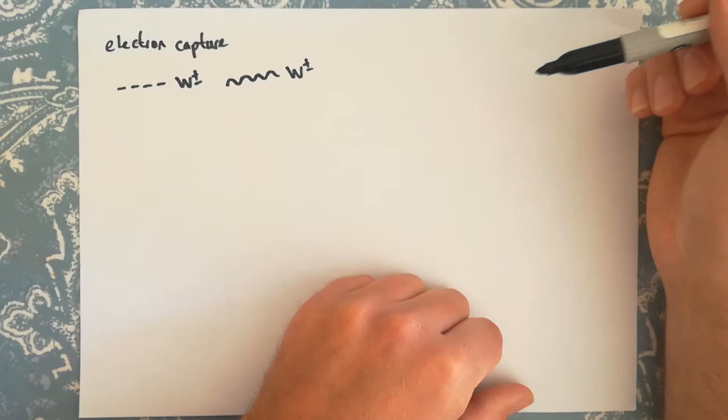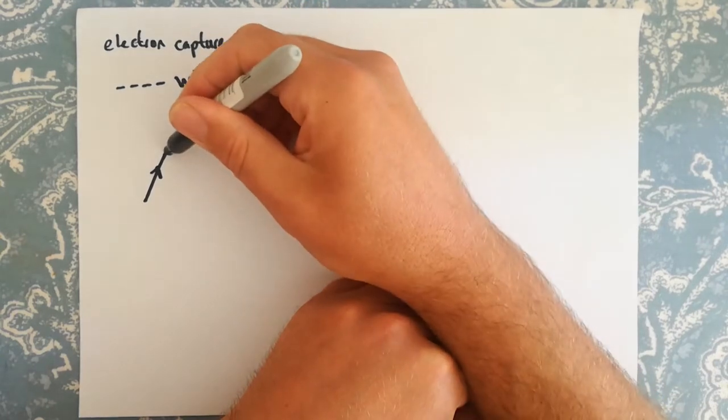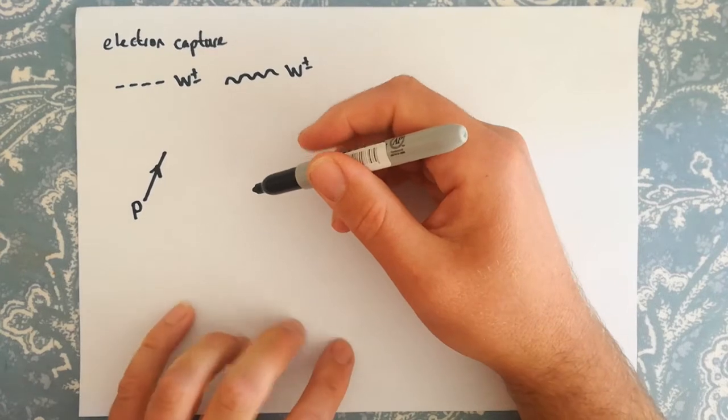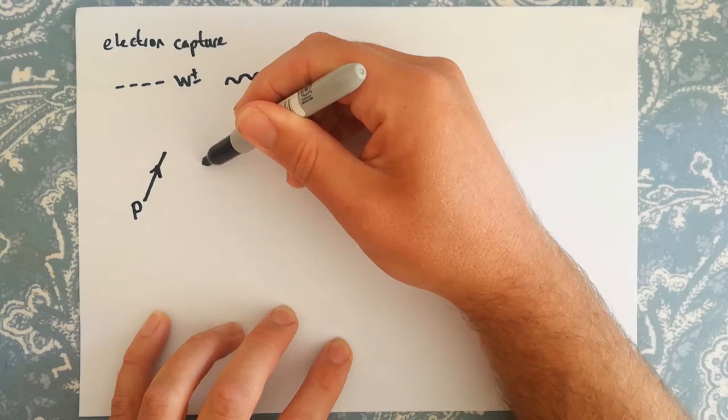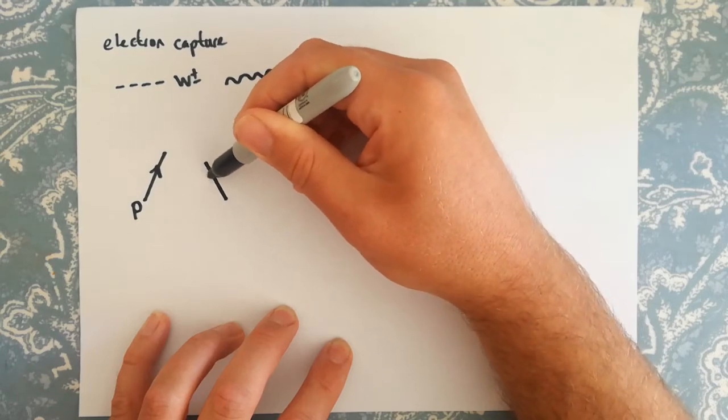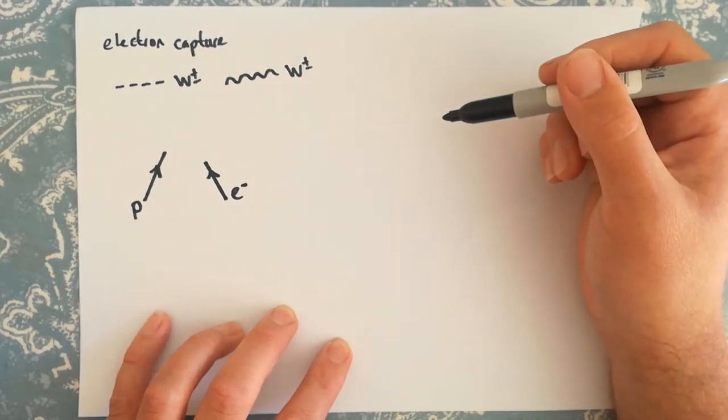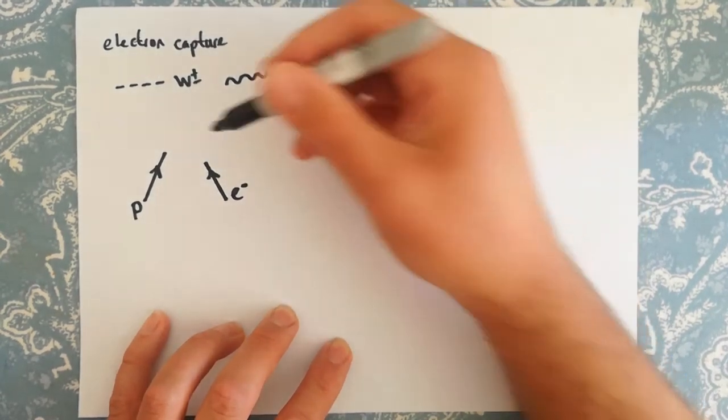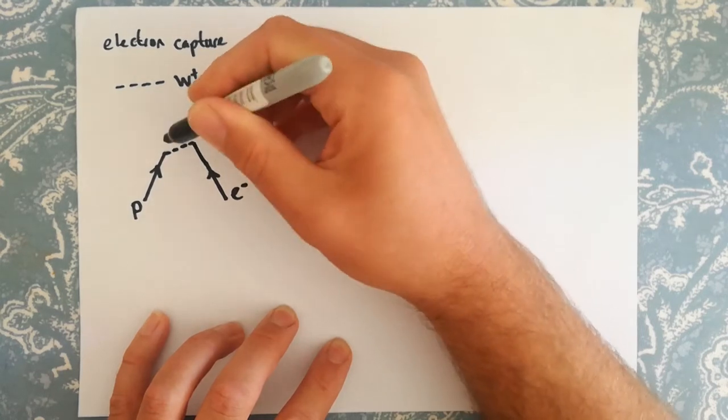Right, okay. So electron capture, we've got a proton. And what's going to happen here is this is going to be a proton that is inside a nucleus, and that nucleus is obviously going to be part of an atom, generally speaking. In electron capture, one of the innermost electrons, so the inner shell of electrons nearest to the nucleus, one of the electrons from that shell is actually captured by a proton.